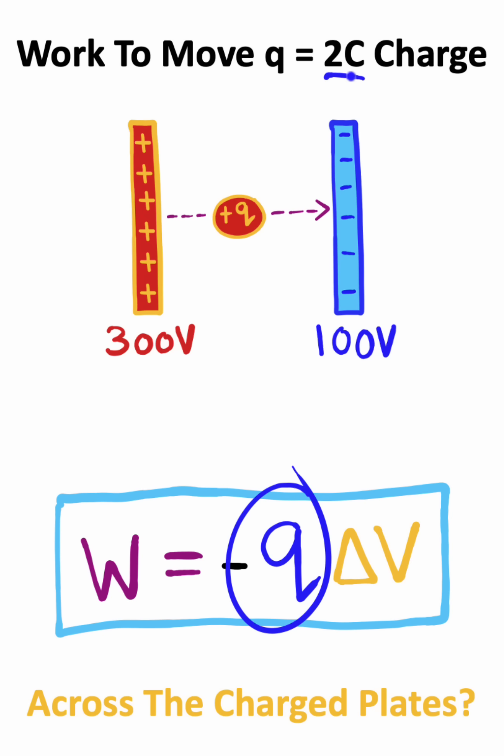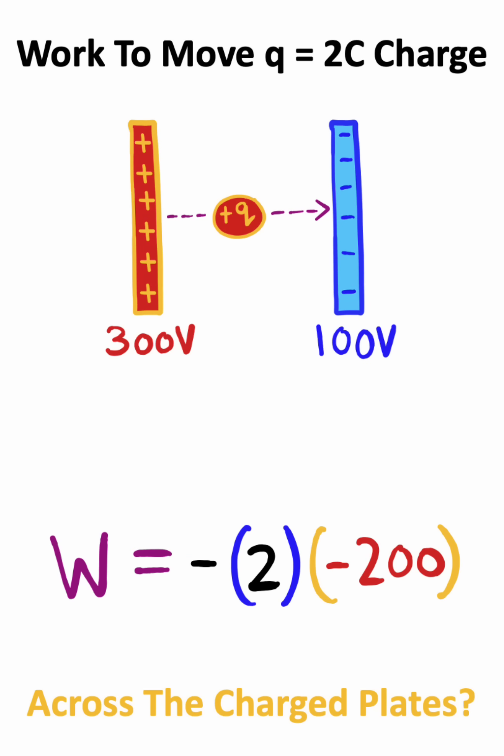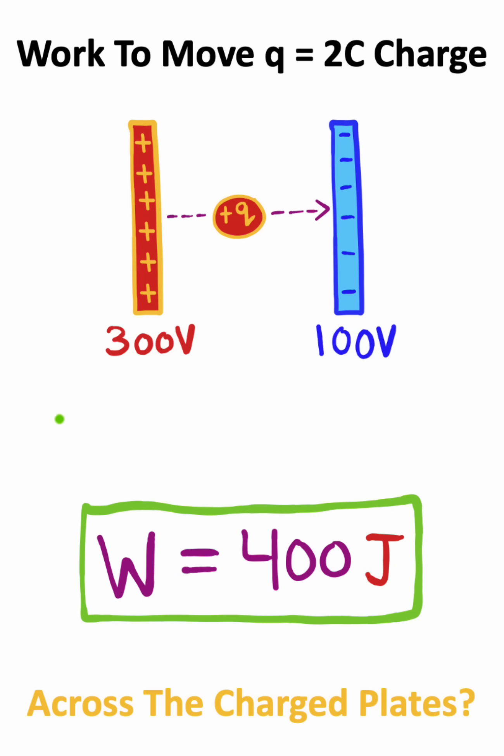So we have an electric charge of 2 coulombs, and the electric potential difference is 100 minus 300, or negative 200 volts. 2 times 200 will give us 400 joules of work as the solution to this problem.